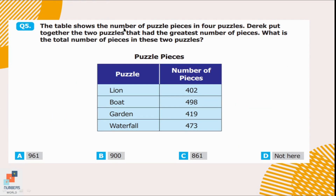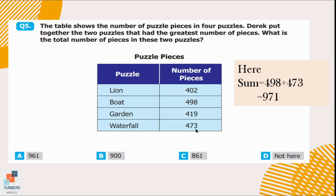Question number 5. A table shows the number of puzzle pieces in 4 puzzles. Derek put together the 3 puzzles that had the greatest number of pieces. What is the total number of pieces in these puzzles? The puzzle with the highest number of pieces is Boat with 498 pieces, and the second highest is Waterfall with 473 pieces. Their sum equals 971. We cannot find this answer in the options, so option D is our answer — it's not here.